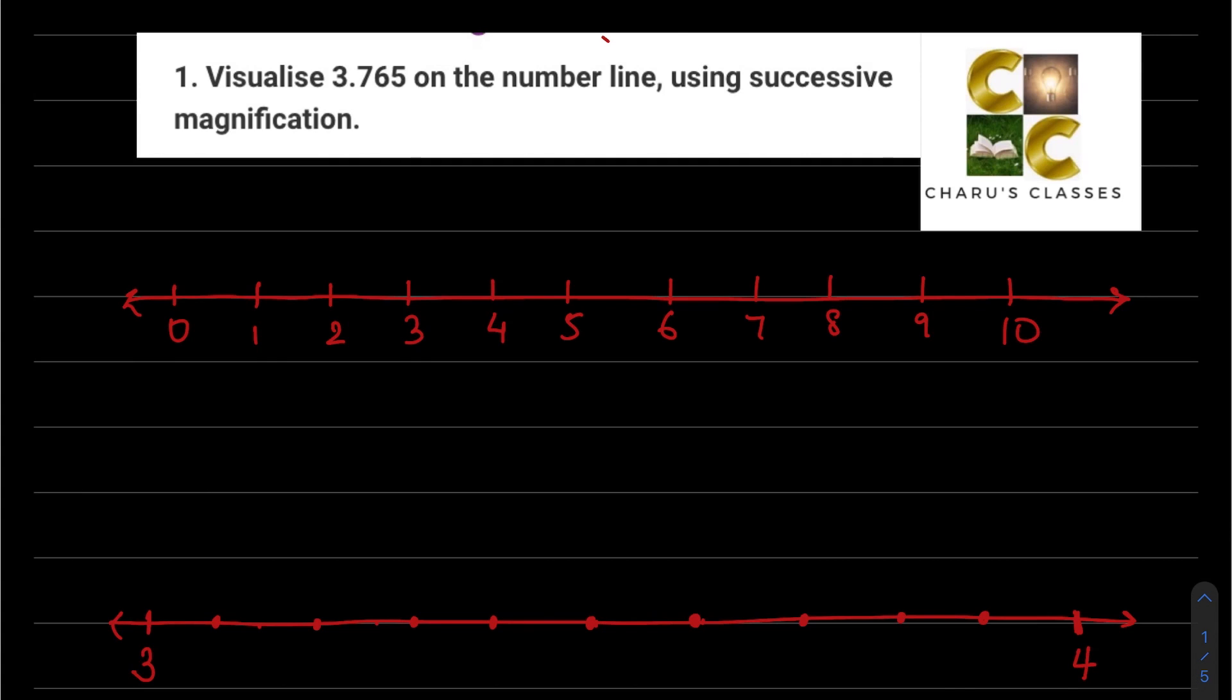Question number 1: Visualize 3.765 on the number line using successive magnification. Successive magnification, magnification ka matlab hai, usko magnify, yani bada karte jana. So here we have to represent this number on the number line.